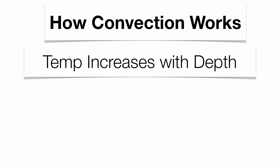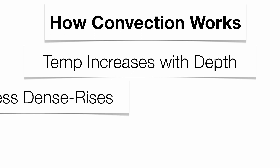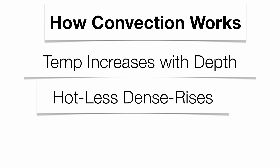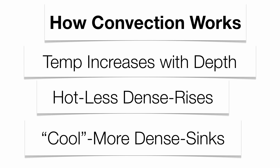Temperature increases with depth. When things become hot they become less dense and rise; when they cool off they become more dense and sink. 'Cooler' is in quotation marks here because when dealing with temperatures inside the Earth, it's still quite warm — just not as warm as deeper in the planet.